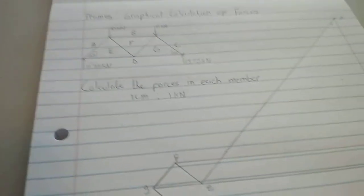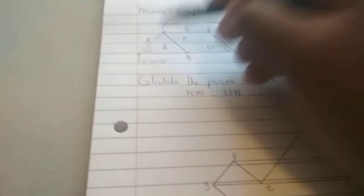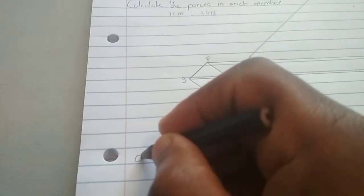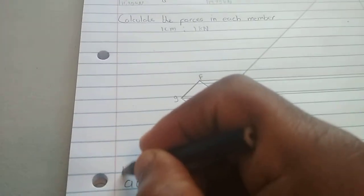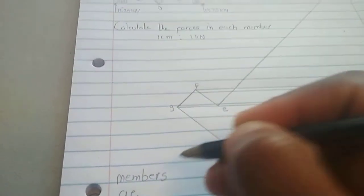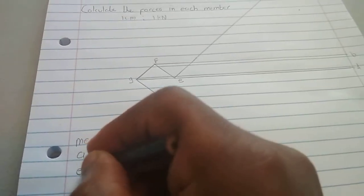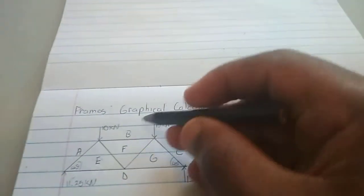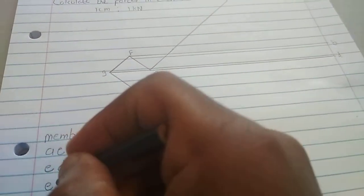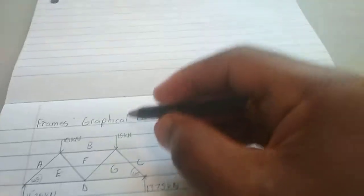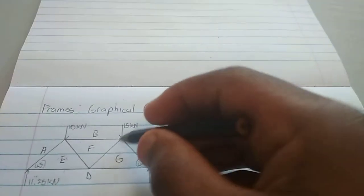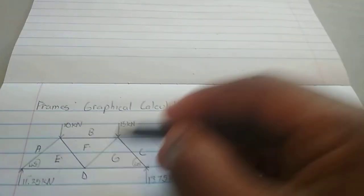Now all we have to do is write the members. So we have member A, E. So we write A, E. All these are the members. The next member is E, D. E, D. The next one E, F. So we go E, F. The next one F, B. We go F, B. The next one is F, G.